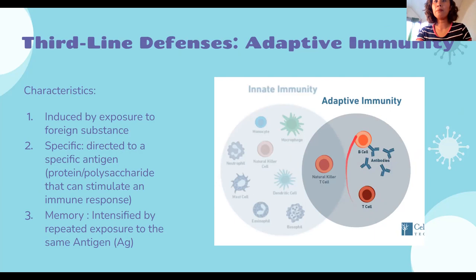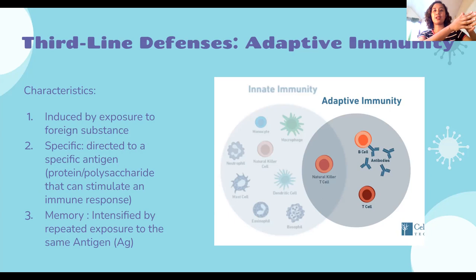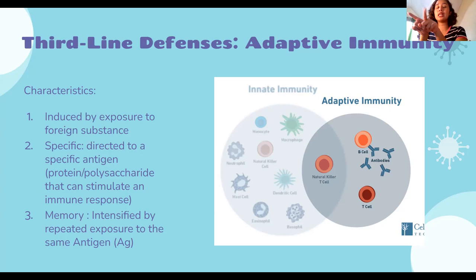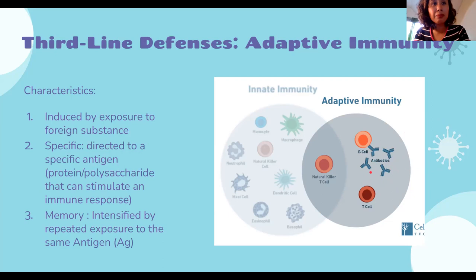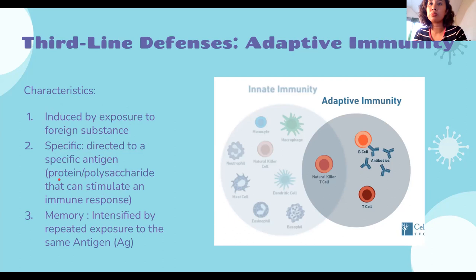The stars of adaptive immunity are B cells and T cells. Your B cells produce antibodies — they differentiate into plasma cells. Your T cells have T helper cells and T cytotoxic cells. Your adaptive immunity compared to innate immunity is very specific. Both are initiated by a foreign substance, but adaptive immunity is highly specific — antibodies against COVID-19 will only attack COVID-19 antigens. Antibodies for malaria only attack malaria antigens.